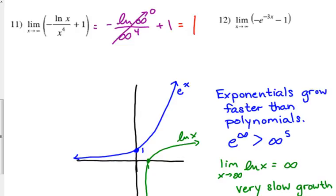Okay, let's look at our e to the x here. e to the x. So when we plug in infinity here, we have negative e to the negative 3 times infinity. And again, I'm going to keep that minus 1.